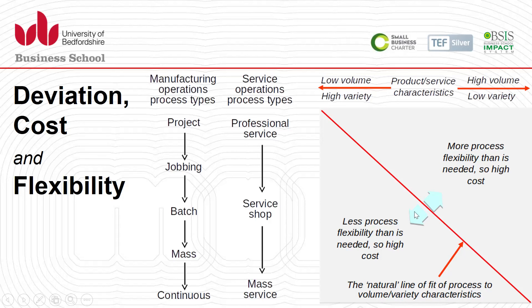Deviation cost is defined as the difference between the final cost of a project or product and the original planned outcome without changes. To calculate deviation cost and maintain flexibility, we calculate the average mean price from the number of periods or observations, determine each period's deviation, sum the squared deviations together, divide by the number of observations, and arrive at a number that represents the standard deviation of the cost needed to ensure efficiency and effectiveness.